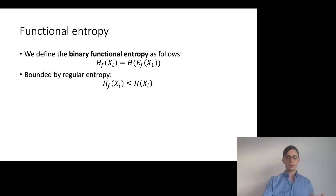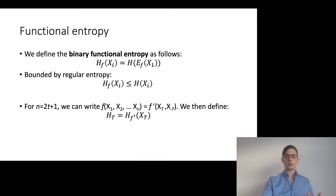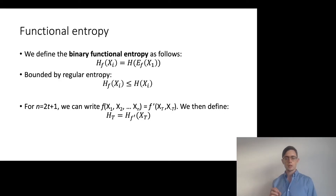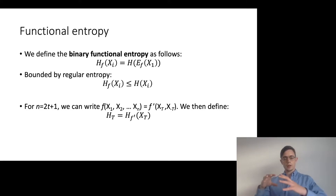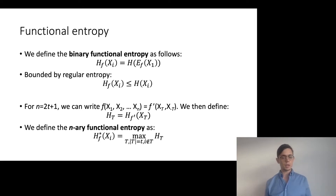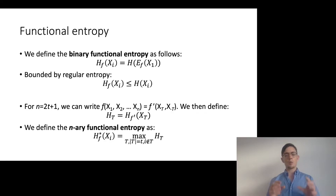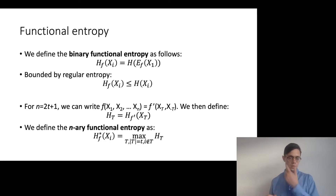In order to consider this for more general functions, suppose we have a function that takes 2t plus 1 inputs. We can write it as a binary function by concatenating together inputs from the other parties, where x sub t is the concatenated input of all players belonging to set t. We define h sub t as the binary functional entropy of this concatenated set of inputs, and then the functional entropy of an input is the maximum value of h_t for every set t of size lowercase t that doesn't contain x_i. So it measures how much uncertainty remains in any group of t players — essentially any coalition that the adversary can corrupt — given that my input is fixed.